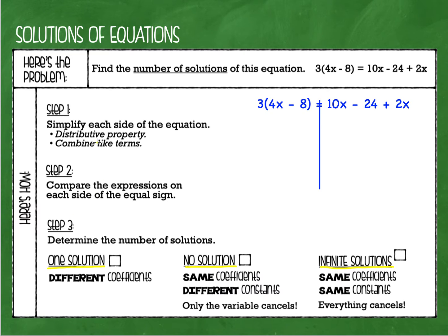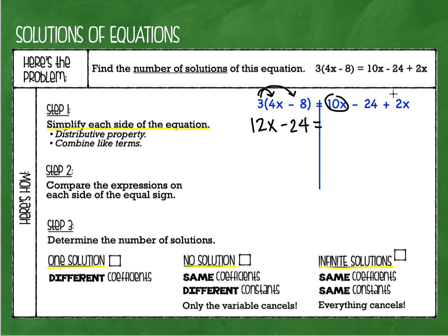Let's go through the steps. For step one we are going to simplify each side of the equation — we're going to use the distributive property and combine like terms. Starting with the distributive property on the left side: 3 times 4x is 12x and 3 times 8 is negative 24. On the right side I don't have distributive property but I do have like terms — I can add 10x and 2x to get 12x, then bring down the minus 24. Each side is simplified and I'm going to stop there.